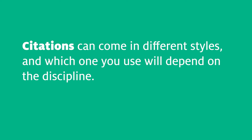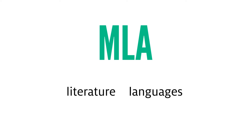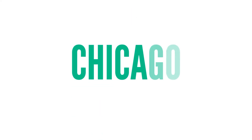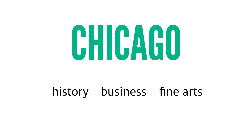Citations can come in different styles, and which one you use will depend on the discipline. MLA is typically used for humanity subjects like literature or languages. APA is used for education, psychology, and many of the sciences. Chicago is common in history, business, and the fine arts. There are also more subject-specific styles, such as IEEE, which is generally used in engineering.